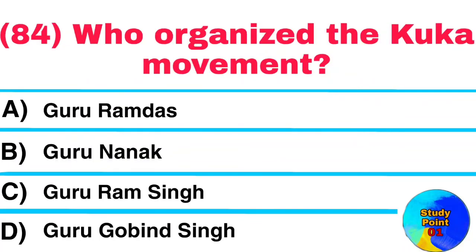Question No. 84. Who organized the Kuka Movement? Answer: Guru Ram Singh.